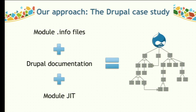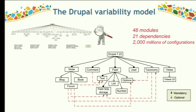The first step was to analyze the info files of each module in Drupal to know the dependencies of each module with the rest. We also studied the Drupal documentation and used the module JIT to get a graphical representation of all the modules and their relationships. Our first contribution was modeling a complete Drupal feature model considering 48 modules. According to Drupal documentation, installing and enabling a new module adds a new feature, so we modeled each module as a feature.